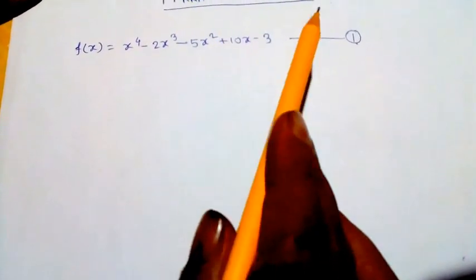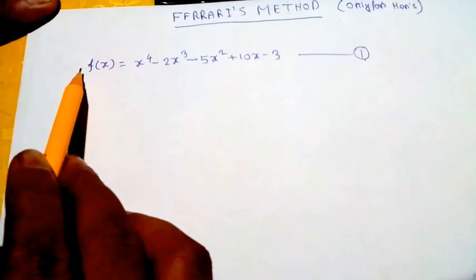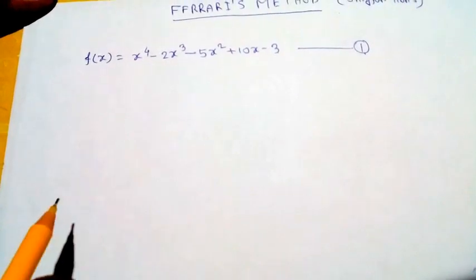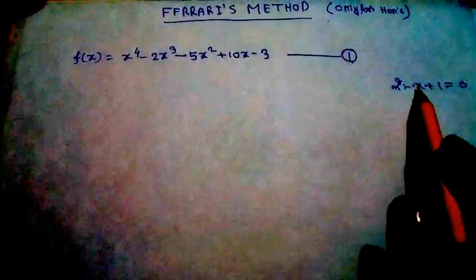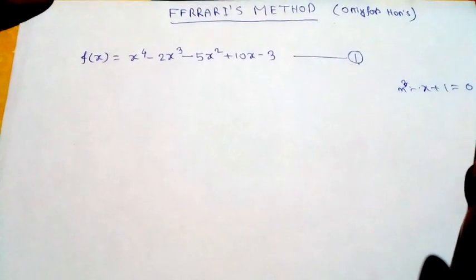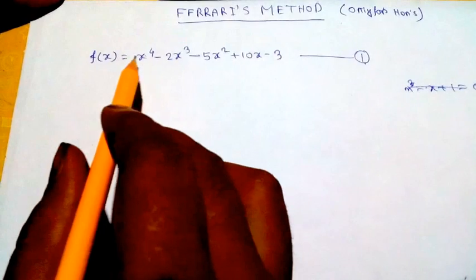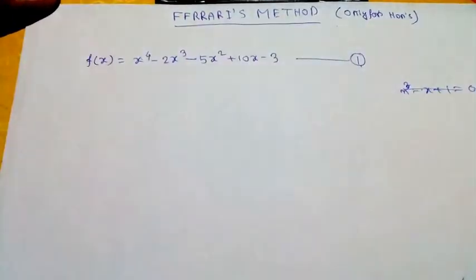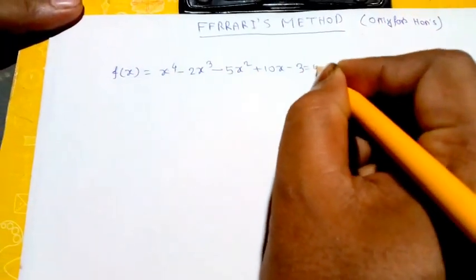Today I will discuss Ferrari's method. For a second degree equation we use the middle term method for finding roots. For a third degree equation, such as x³ - x + 1, we use the zero-putting method or Cardan's method. For a fourth degree (bi-quadric) equation, we use Ferrari's method to find the roots.